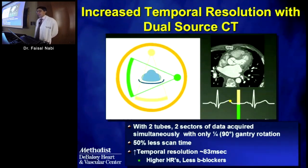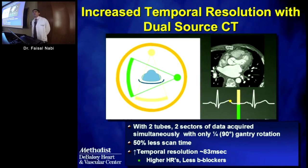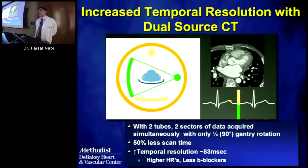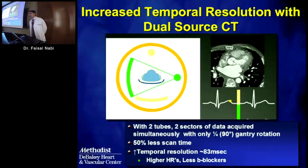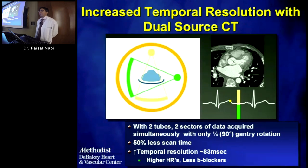Dual source CT is the solution in 2015 and beyond. With two detector heads at 90 degrees to each other, only a quarter gantry rotation is required to create an image. Therefore, temporal resolution is one-fourth of the gantry rotation time—330 milliseconds divided by four equals approximately 83 milliseconds. This allows imaging at higher heart rates while still obtaining still images, and increases lab throughput without being as aggressive with beta blocking.